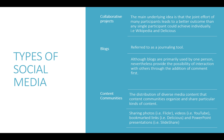These are the types of social media according to Kaplan and Hanlon as well as Mayfield, as various authors have attempted to describe different types of social media. Firstly, collaborative projects — the main underlying idea is that the joint effort of many participants leads to a better outcome than any single participant could achieve individually. Kaplan and Hanlon gave the example of Wikipedia and Delicious as types of social media that are collaborative projects.